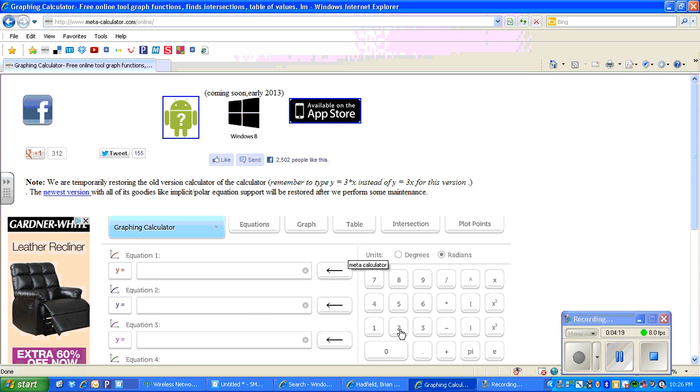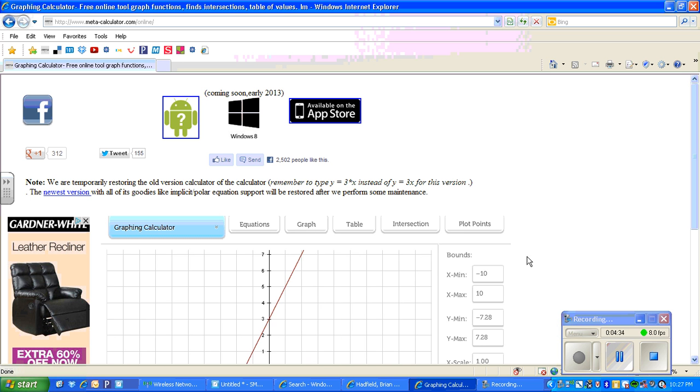So the equation was 2x plus 3. So we'll do 2x. And it does a double x. That one is the multiply. It's unfortunate they used the, they didn't go with an asterisk. So we've got 2x, so it's 2 times x, right? Plus 3. Hit graph. Take a look at it.